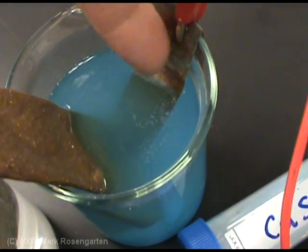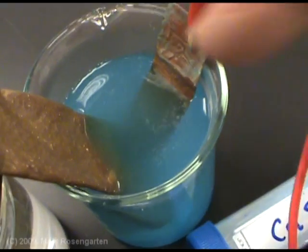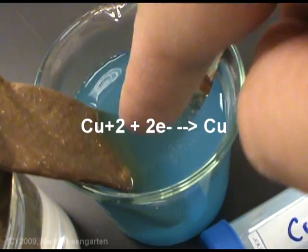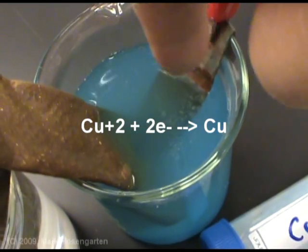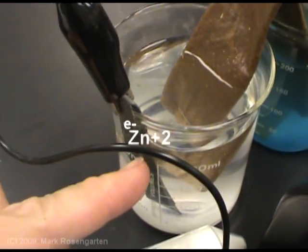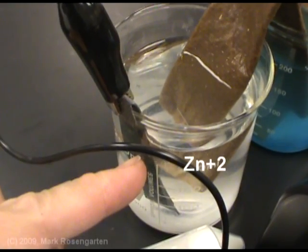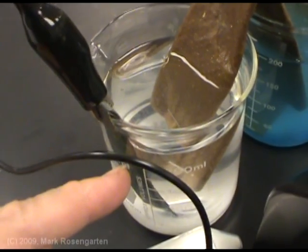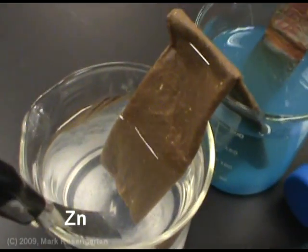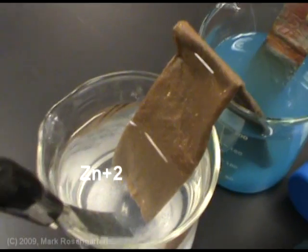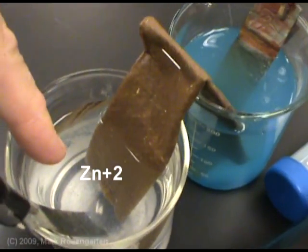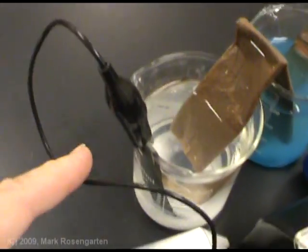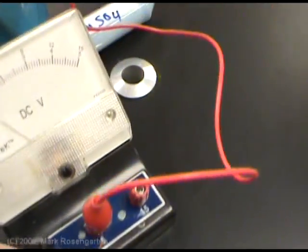This metal strip is actually going to gain mass over time, and the solution will lose concentration of copper ions, as copper plus 2 turns into copper zero. In this beaker, as the zinc turns from zero to plus 2, the mass of the zinc strip is going to decrease, as the zinc dissolves to form zinc ions in the solution. So, the concentration of zinc ions in this beaker will go up, as the electrons leave and go through the wire and through the load.